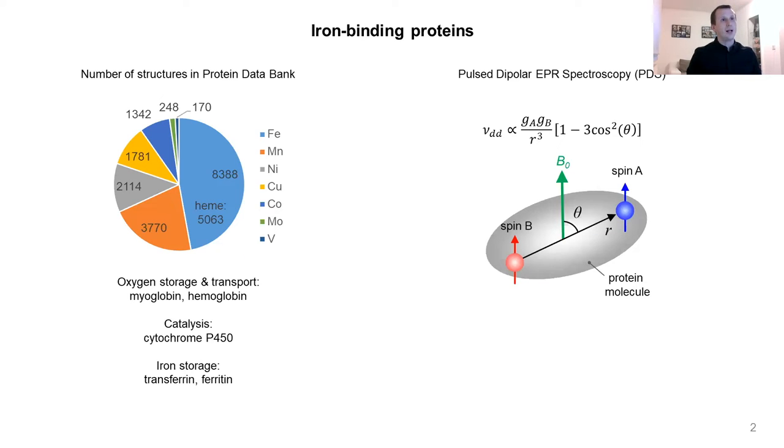In order to understand the function of these proteins at the molecular level, methods are required to study the structure. One such method is pulsed bipolar EPR spectroscopy, or shortly PDS. PDS allows to measure the distances between two or more electron spin centers within a biomolecule by measuring the dipolar coupling between these spin centers. As you can see from the equation, the dipolar coupling is inversely proportional to the third power of the distance, so there is a correlation between these two.